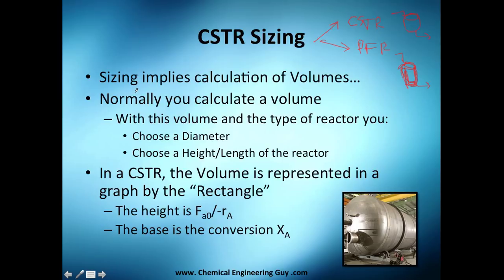CSTR sizing implies calculation of volumes. Normally you calculate the volume given the conversion, flow conditions, and rate of reaction. With this volume you go to typical ways to choose diameter to height ratios. You choose a diameter and height if you're doing a tank, or length if you're doing a pipe. We're not going to do that in this course, but it's normal that a chemical engineer do that.